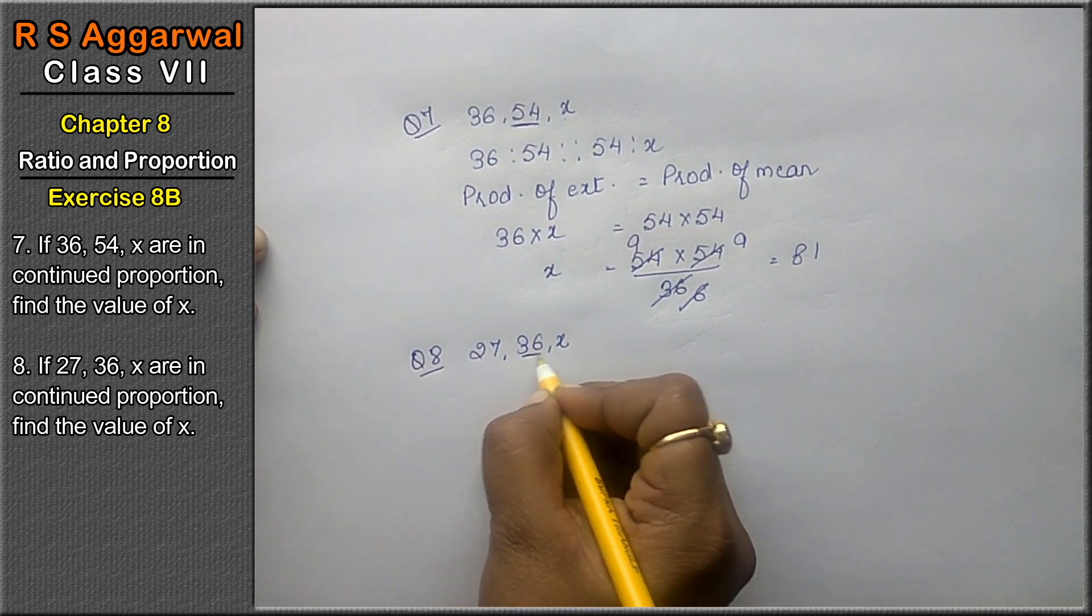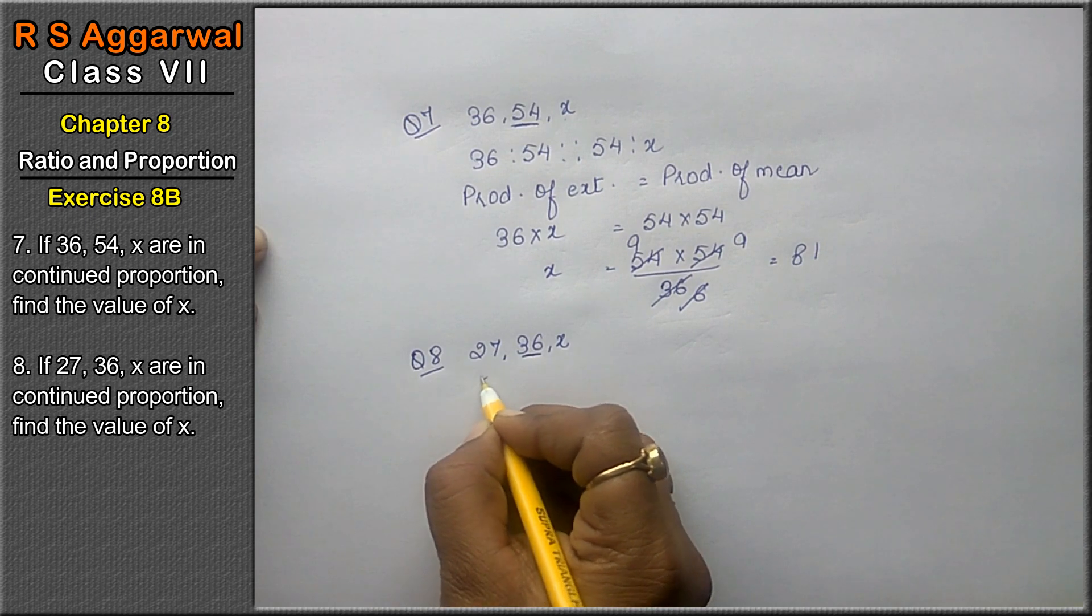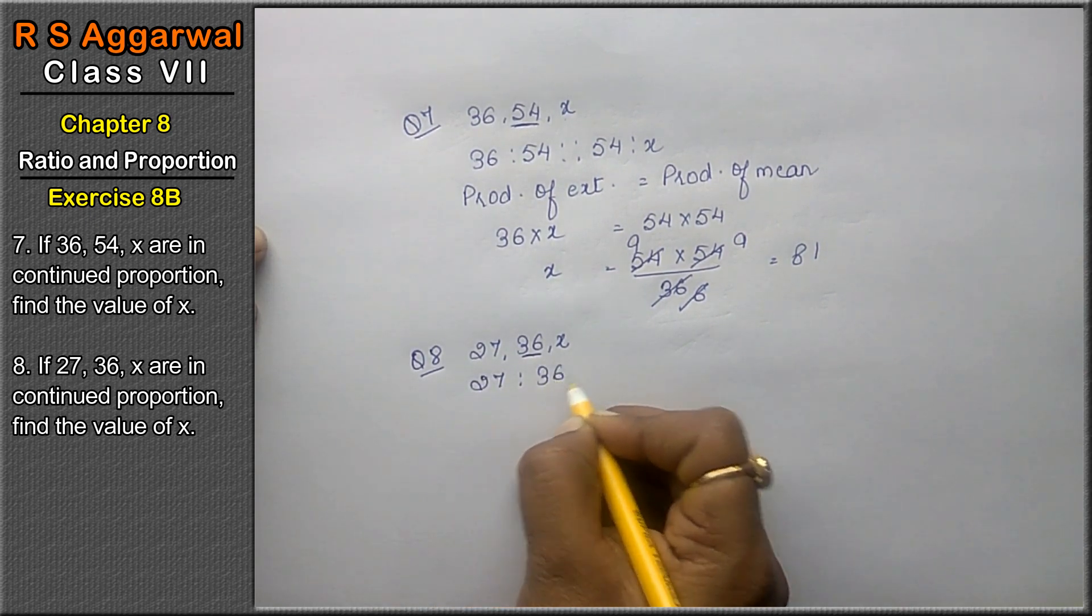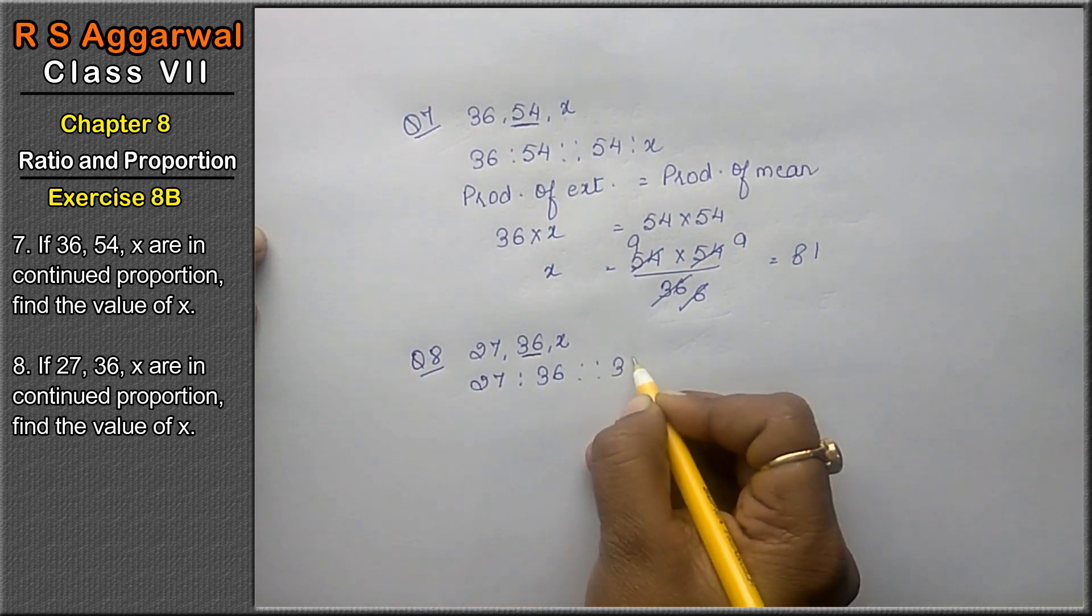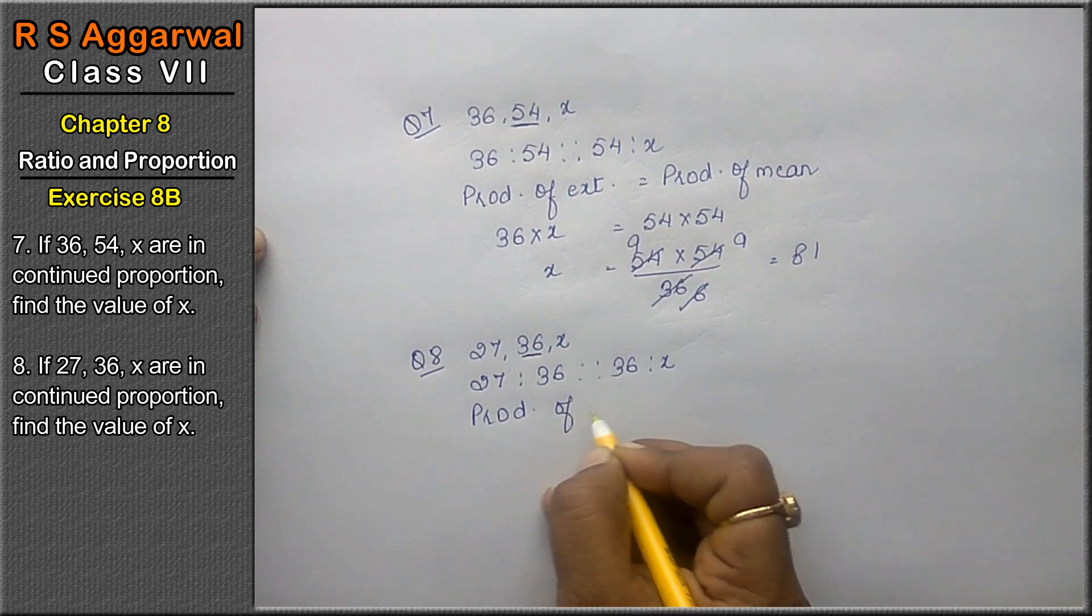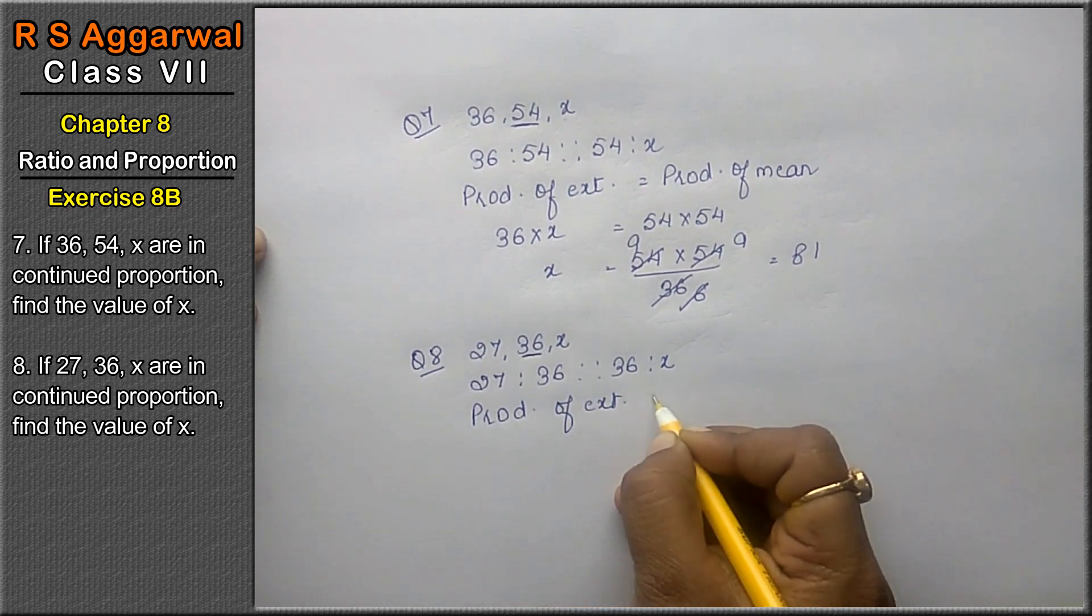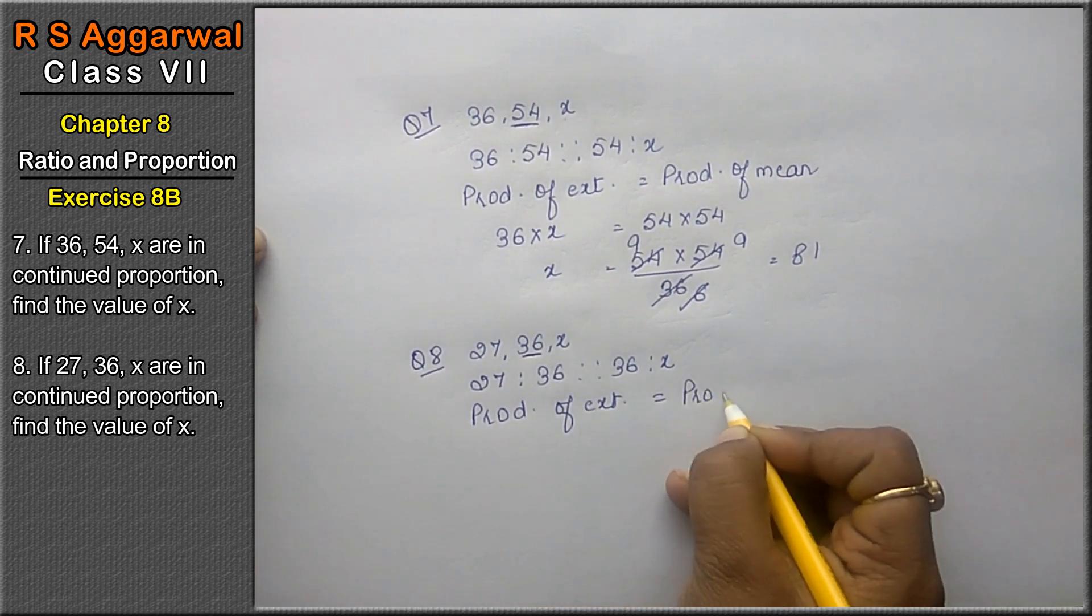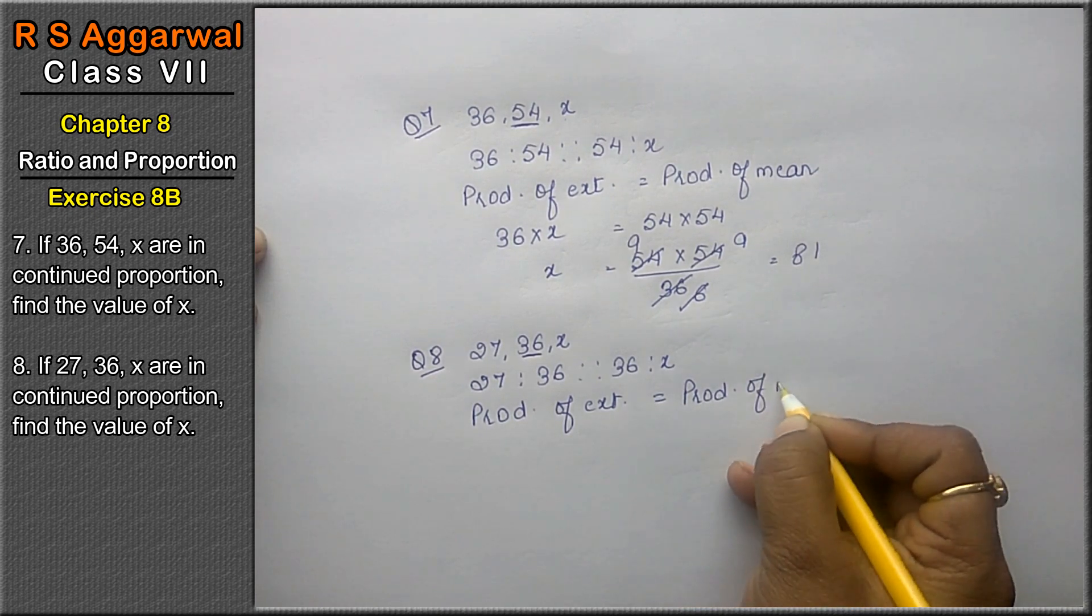The middle term in continued proportion appears 2 times. That means 27 is to 36 is to 36 is to x. The product of extremes equals the product of means.